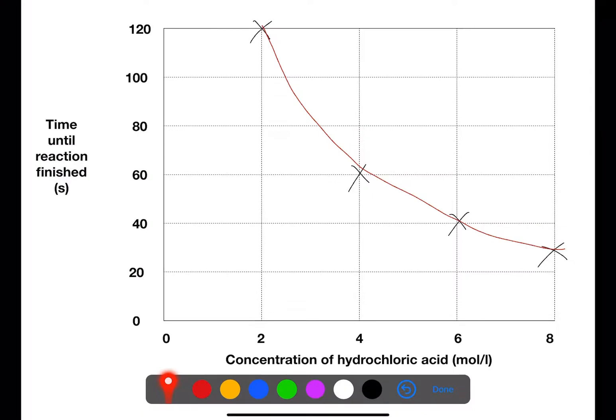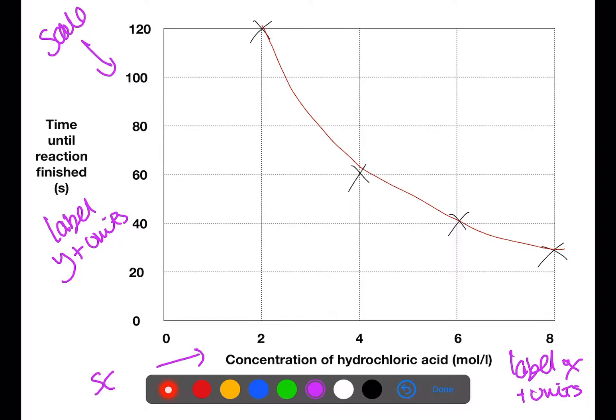Here is an example of a line of best fit that is a curve. So here we have a label for the x-axis and we have units for concentration. We have a label for the y-axis and units for time. We have a scale going up in twenties. We have a scale going up in twos. And here we have a curve that is best fit.